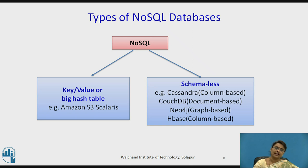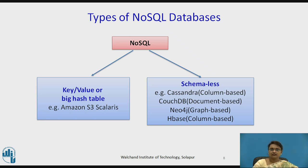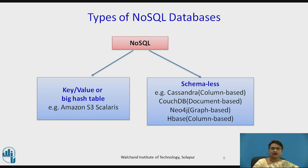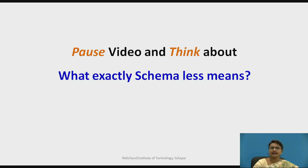Let us talk about the types of NoSQL databases. Basically NoSQL databases are divided into two categories: key-value pair (also called the big hash table) and schema-less databases. The key-value pair is supported by Amazon S3 and Scalaris, while schema-less includes column-based, document-based, graph-based, and many more. Let us see these in more detail.